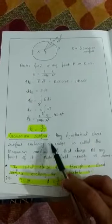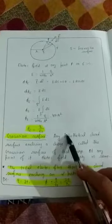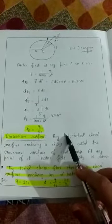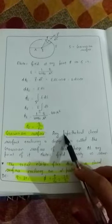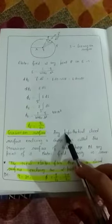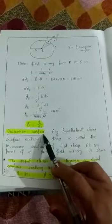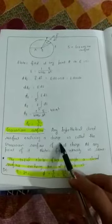This I told you earlier, Gaussian surface is hypothetical surface that encloses the charge. At any point on Gaussian surface, electric field intensity remains the same. Point charge has spherical Gaussian surface, line charge has cylindrical.